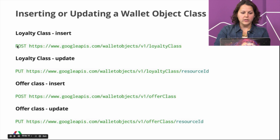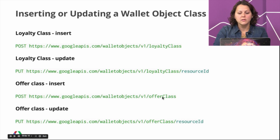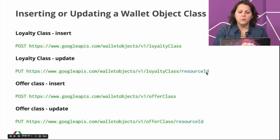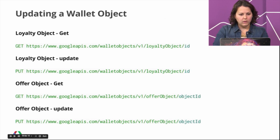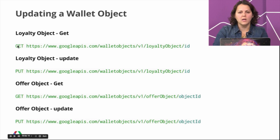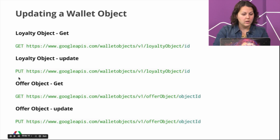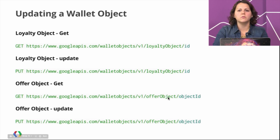Looking at our slide, you'll see a URI to POST and insert a new loyalty class. It looks very similar for our offer class — the only thing changing is the type of object being inserted. The same applies when we try to do an update; we just need to PUT to this URI and send the resource ID, which is the unique identifier for the class. We also have the URIs to get and update an object — using the unique loyalty object ID — and this works for offers, loyalties, and all our verticals.